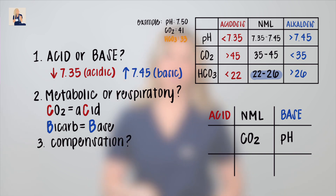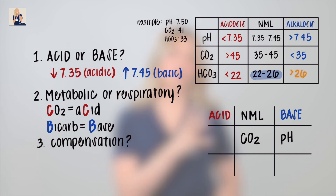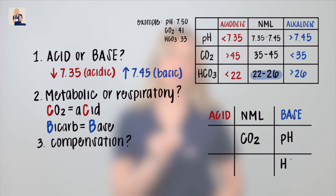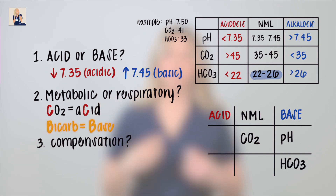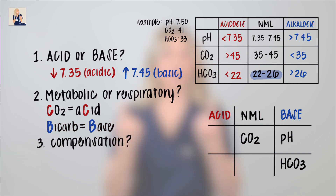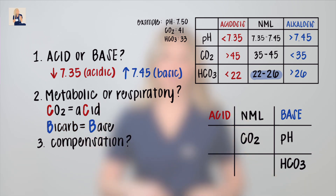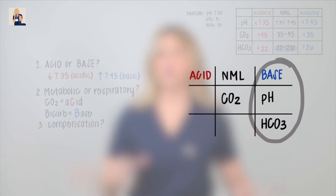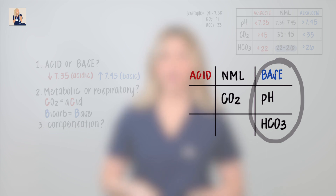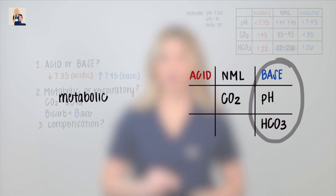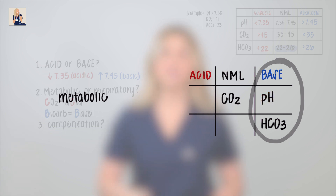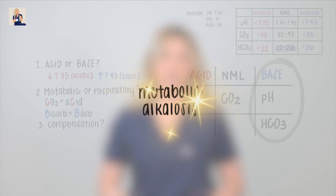Bicarbonate is 33, which is higher than normal, so we're going to put that under the base column. Remember that bicarb is a base, so the more bicarb we have, the more basic we get. We play tic-tac-toe and circle three in a row — bicarb is a metabolic parameter, and our pH is under the base column, so the answer is metabolic alkalosis.